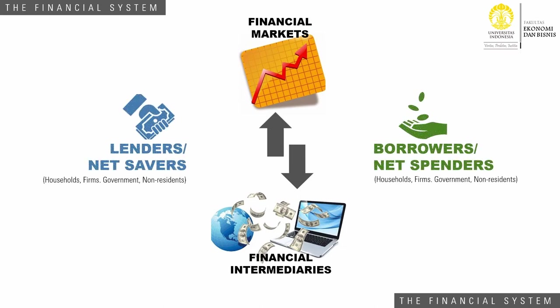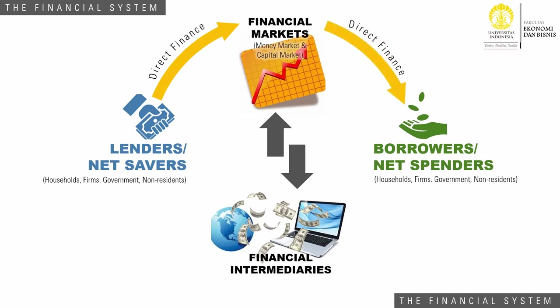The difference is that through financial markets, funds will be channeled directly. A company may issue bonds or sell stocks in the capital market and get funds from the transaction, or a bank may get an overnight loan from other banks in the money market. On the other hand, with financial intermediaries, borrowers do not get the funds directly.